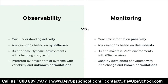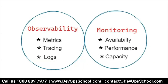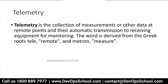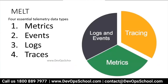Observability is preferred by developers for systems with variability and unknown permutations, while monitoring was used for systems with little change and known permutations. Observability helps you focus on metrics, tracing, and log capturing, whereas monitoring only focuses on availability — whether the system is available, performing well, and within capacity.